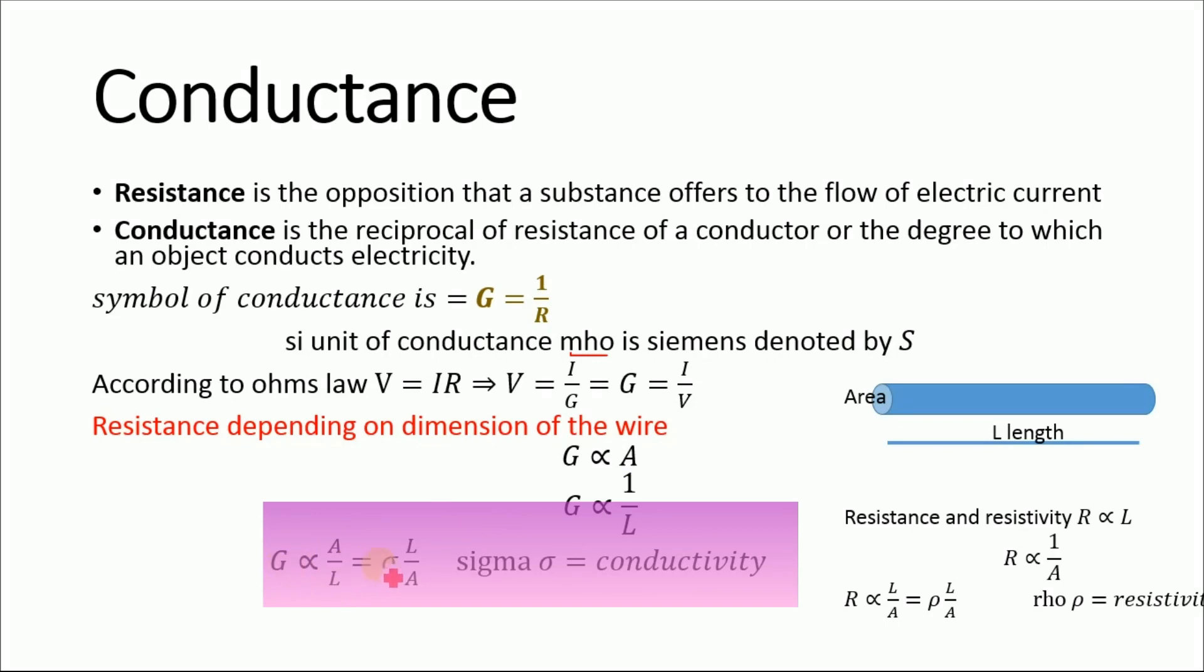Or G equals sigma times A divided by L. This sigma is the constant of proportionality and is known as the conductivity.